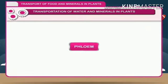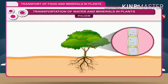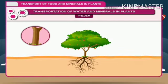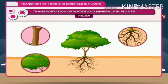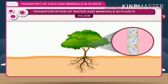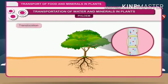Phloem consists of long, thin tubular structures placed one above the other. It conducts food produced in the leaves to the stems, roots, storage parts, and reproductive organs. The movement of food substances from the region of synthesis to the region of utilization is called translocation.